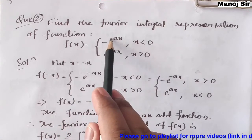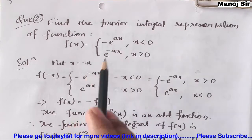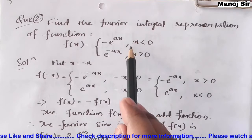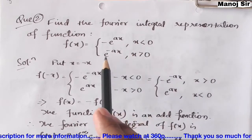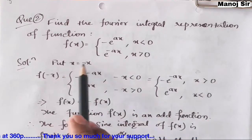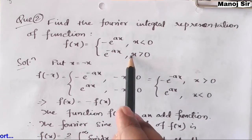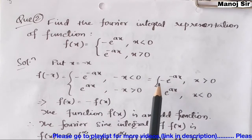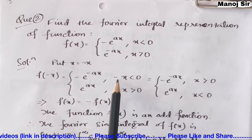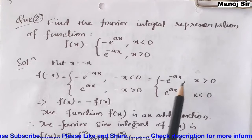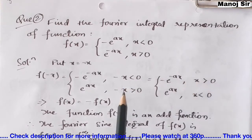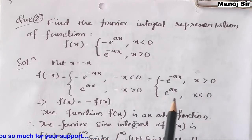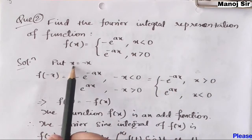On putting x = -x to find f(-x): the first piece becomes -e^(-ax) when x < 0, and the second piece becomes e^(ax) when x > 0. Now if you multiply both sides by negative, this part becomes positive and the inequality signs flip accordingly.